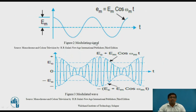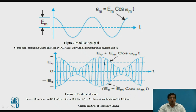Figure two shows the modulating signal. The graph is drawn EM versus time. This signal is called the message signal and is represented by EM = EM·cos(ωM·t). Figure three shows the modulated wave — it is a combination of figure one and figure two, that is the unmodulated signal and the modulated signal. The equation becomes (EC + EM·cos(ωM·t)) and −(EC + EM·cos(ωM·t)), and this graph is drawn carrier versus time.